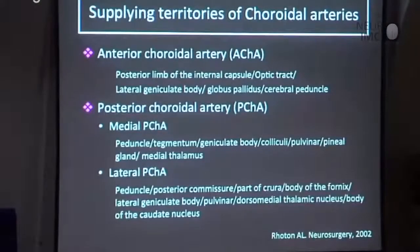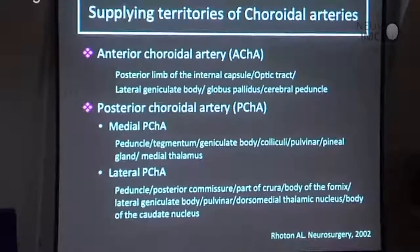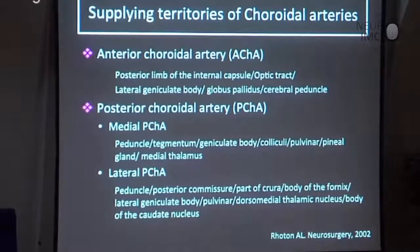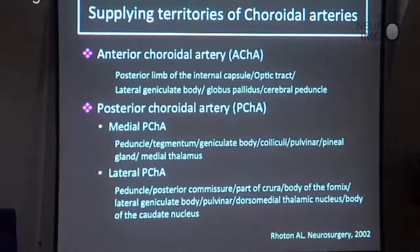The anterior choroidal artery supplies the posterior limb of the internal capsule, optic tract, lateral geniculate body, globus pallidus, and cerebral peduncle. The medial posterior choroidal artery supplies the peduncle, tegmentum, geniculate body, corpora quadrigemina, pulvinar, pineal gland, and medial thalamus.